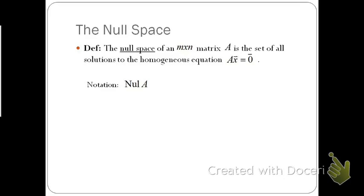When we talk about the null space, the null space of an m by n matrix A is the set of all solutions to the homogeneous linear system Ax equals 0. We use this notation here and we read this as null of A.